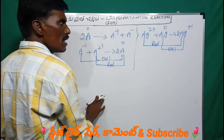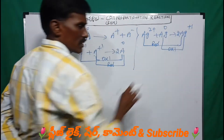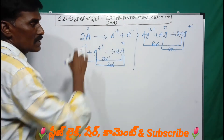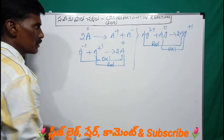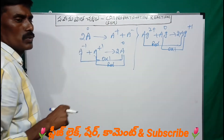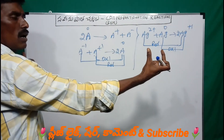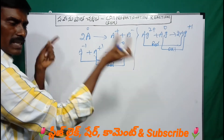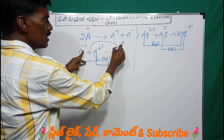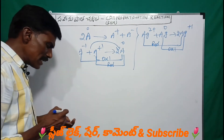We have 3 oxidation states. In the reactant state we have 2 oxidation states, and in the product we have 1 oxidation state. The product side has 2 oxidation states and the reactant side has 1 oxidation state — this is the relationship between the whole oxidation states.